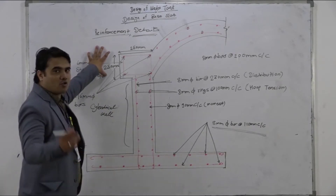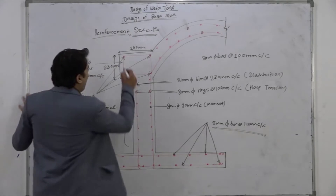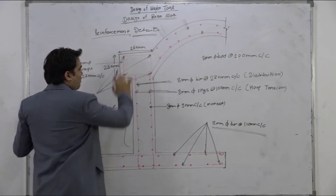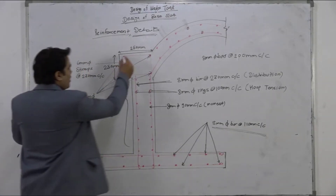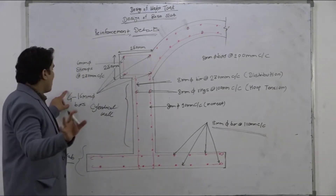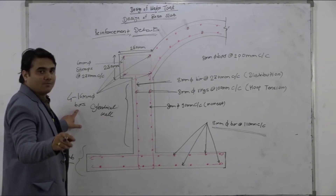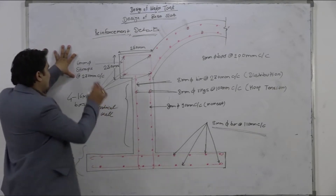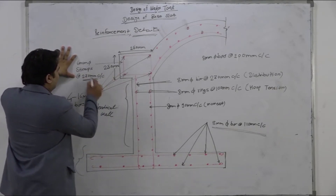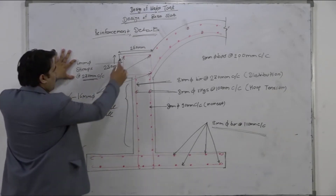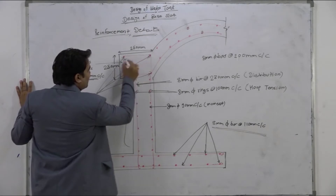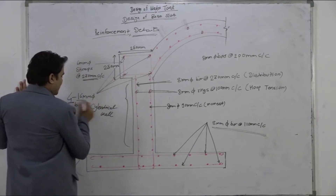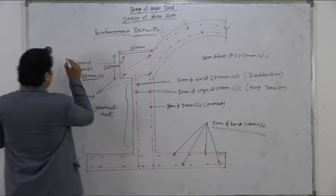Now for the ring beams, we chose a square cross-section of 250 mm by 250 mm. We provided four numbers of 16 mm diameter bars. Stirrups of 6 mm diameter were also provided at 230 mm center to center. So four bars of 16 mm diameter and 6 mm stirrups — this is all about the ring beam.